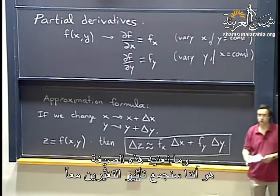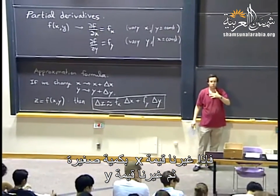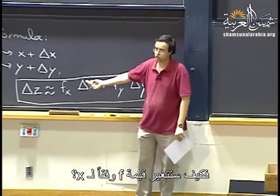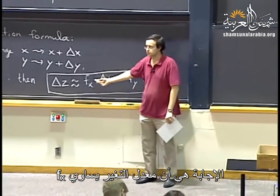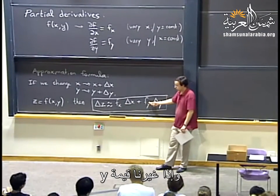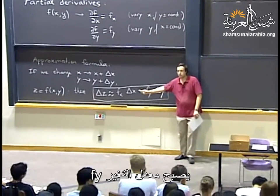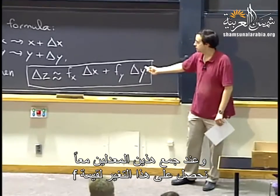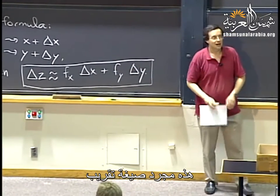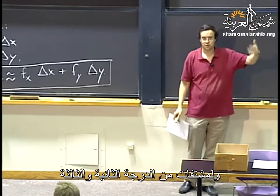The intuition is that the two effects add up. If I change x by a small amount, the rate of change is f sub x. If I change y, the rate of change of f when I change y is f sub y. Altogether, I get this change in the value of f. That is only an approximation formula — there would be higher order terms involving second and third derivatives and so on.